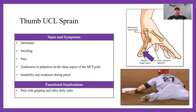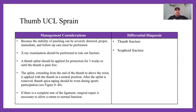Signs and symptoms: deformity, swelling, pain, tenderness on palpation, instability, and weakness during pinching, with pain during gripping and other daily tasks. The thumb is one of the most important pieces of anatomy on your body — it's the opposable thumb, what makes humans special. If that gets injured, you really need to take care of it.